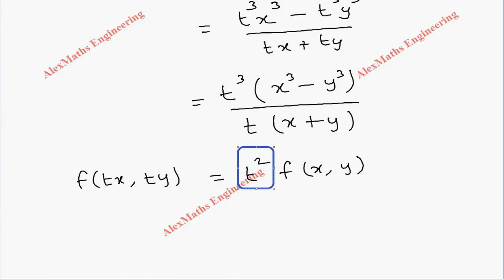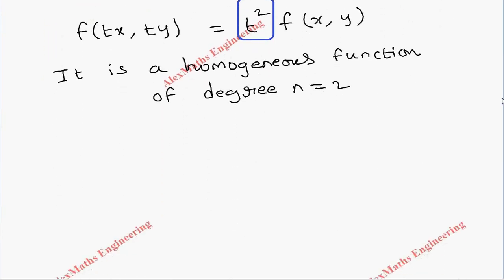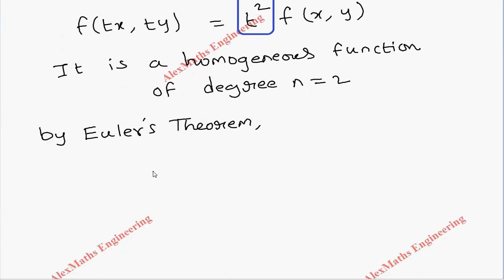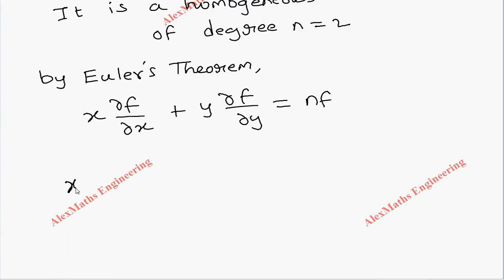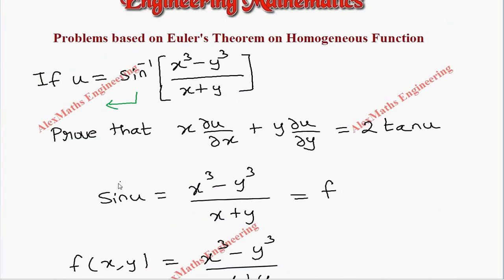Therefore by Euler's theorem we have x∂f/∂x + y∂f/∂y = nf. In place of this f we can substitute sin u, so I am going to take sin u.